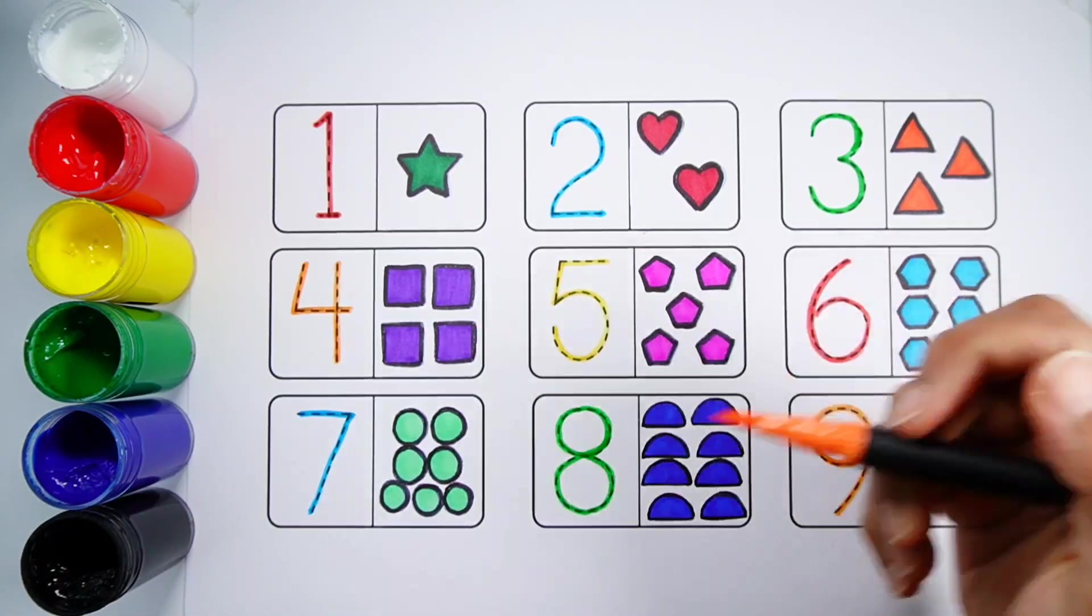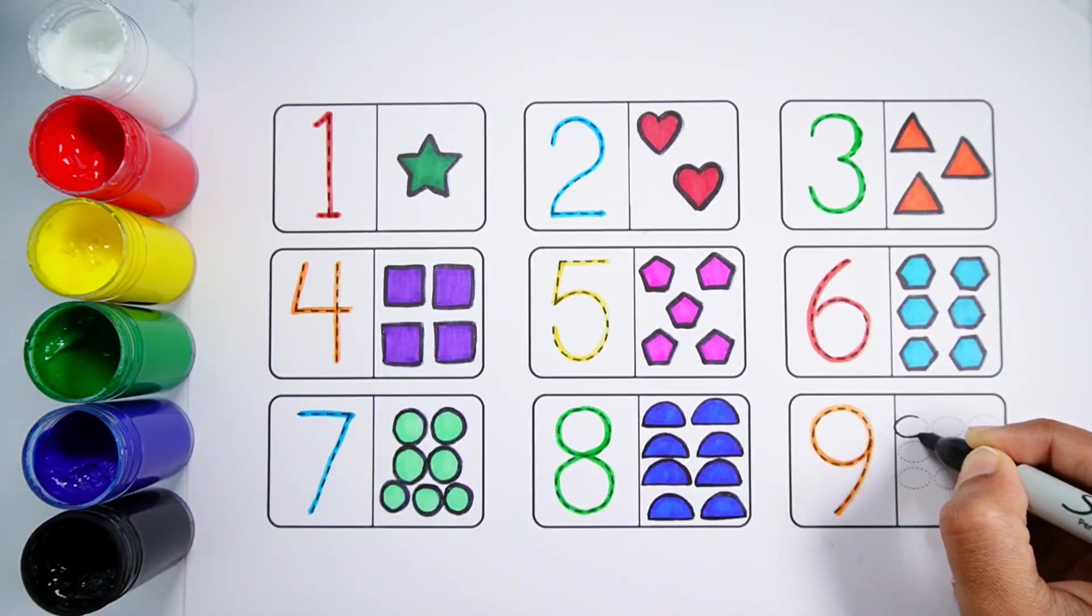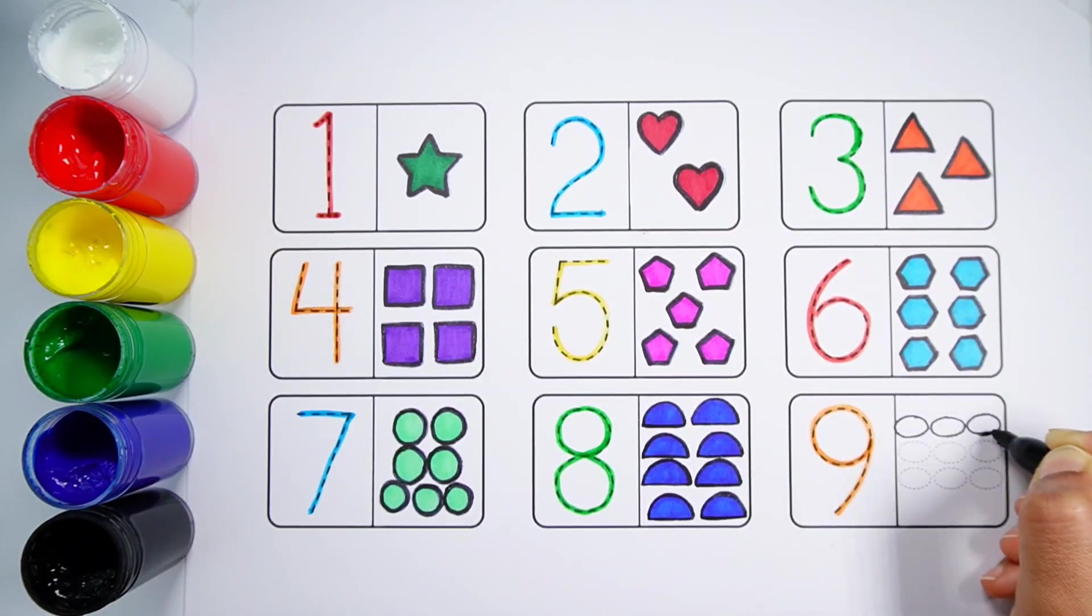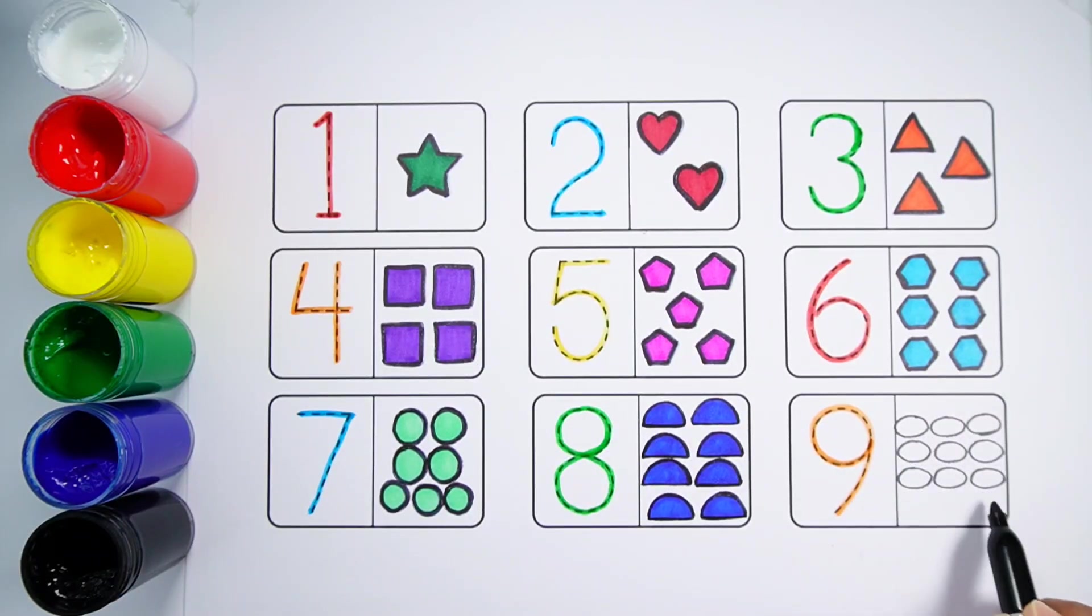Number 9. One Two Three Four Five Six Seven Eight Nine. Nine Ovals.